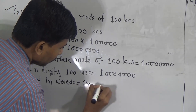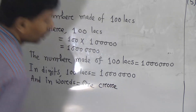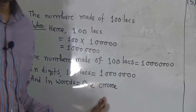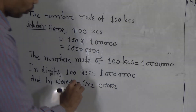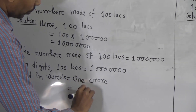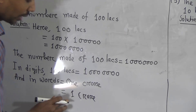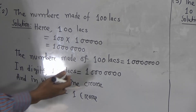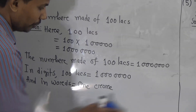One crore. Say C-R-O-R-E. This is finished — just don't write it incorrectly. Write 'one crore.' I hope that one is good.